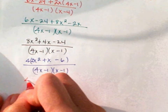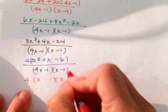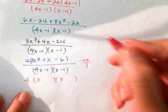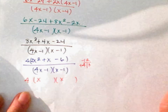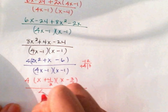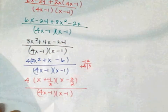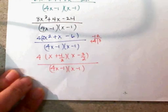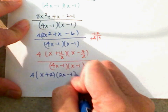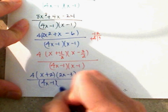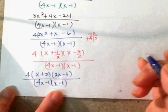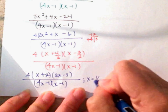Bring down your 4. Let's see if we can factor some terms. 2 times negative 6 is negative 12. What two numbers multiply to give you negative 12 and subtract to give you positive 1? Plus 4 minus 3. Divide that by your a. So now you have 4 times x plus 2 times 2x minus 3, all of it over 4x minus 1 times x minus 4. Is there anything that can cancel out? Nope, so that's your final answer. And x cannot be 1 fourth, and x cannot be 1.